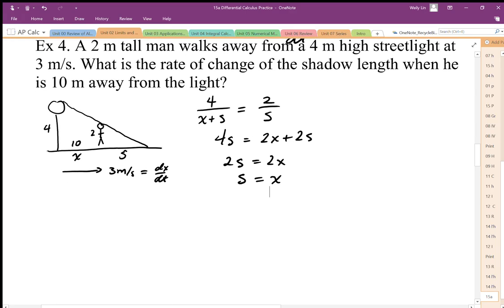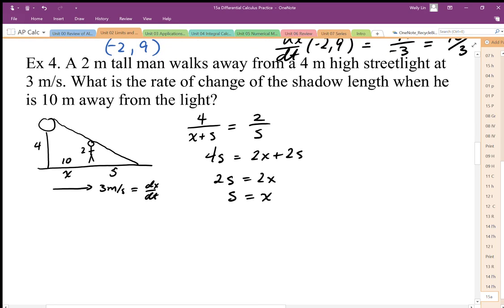So how do we do this as a related rate problem? So first thing is we've got the variables in question, we've related them, we simplified the expression. The second thing is to differentiate this implicitly.